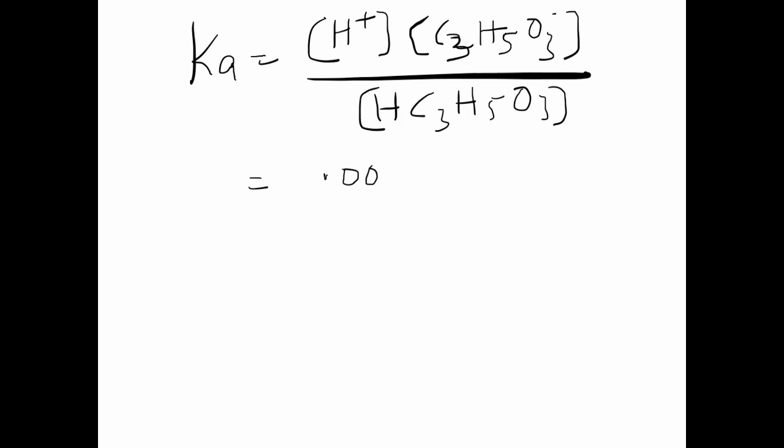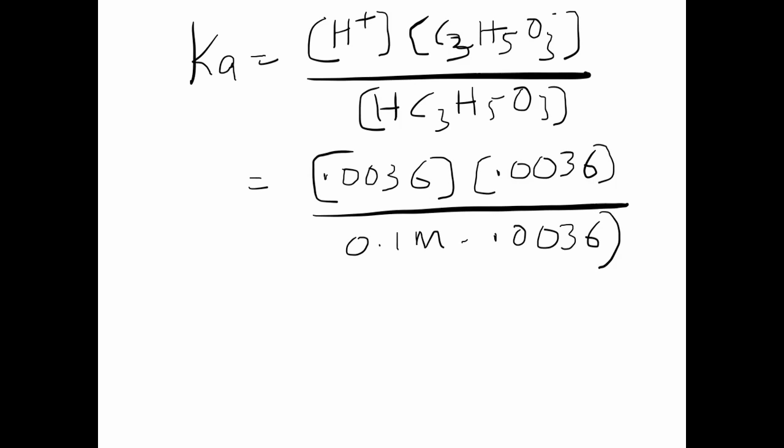We can put these numbers: 0.0036 molar times 0.0036 divided by 0.1 minus 0.0036, and this value is going to be equal to 1.36 times 10 to the negative 4, that's your Ka.